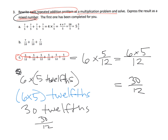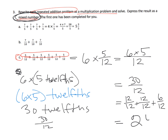Now we need to represent 30 twelfths as a mixed number. We can think of it as 12 twelfths plus 12 twelfths, that's 24 twelfths, plus 6 more twelfths — giving us 30 twelfths. Since 12 twelfths equals 1, two groups of 12 twelfths equal 2, so we get 2 and 6 twelfths. And don't forget, 6 twelfths simplifies to 1 half, so the answer is 2 and 1 half.